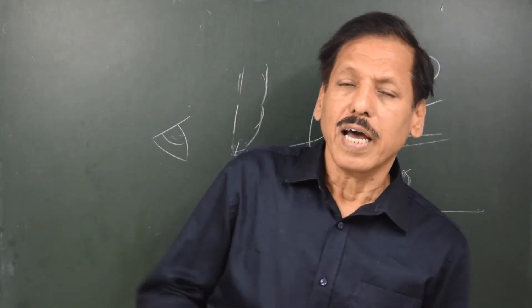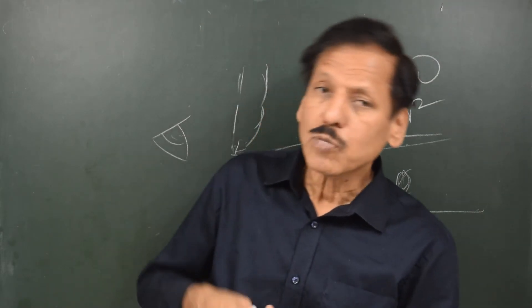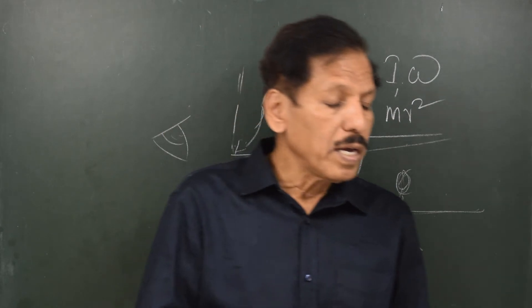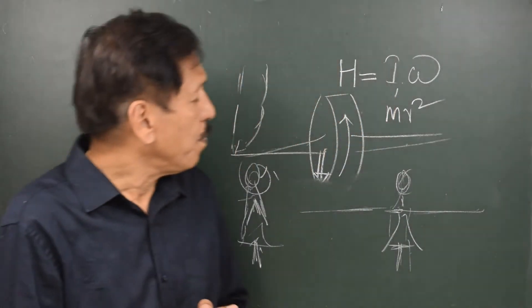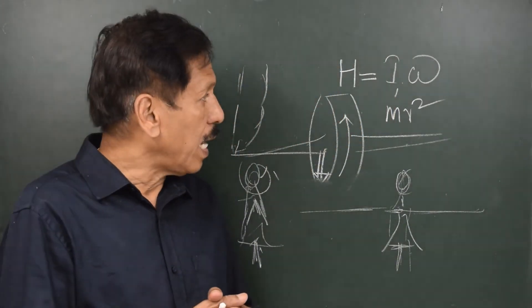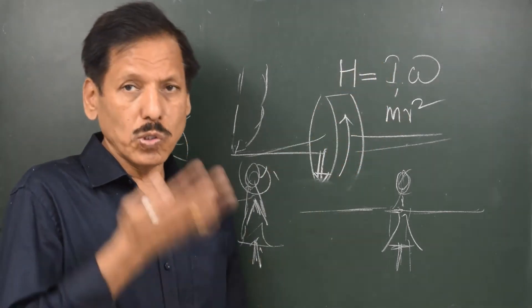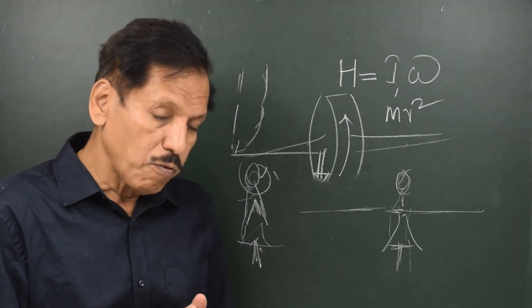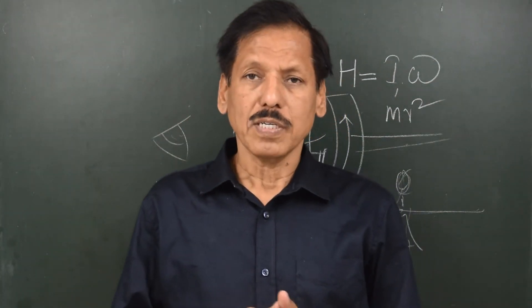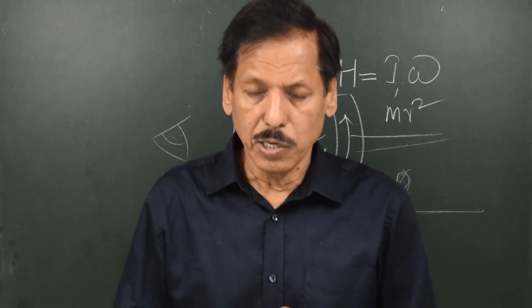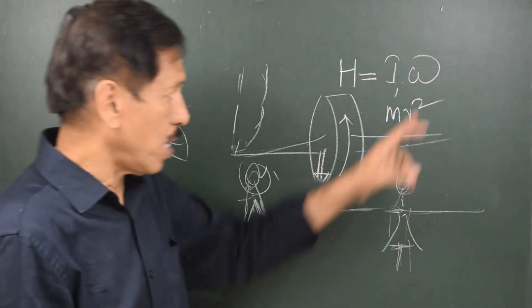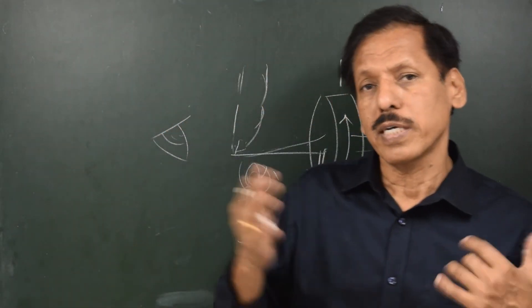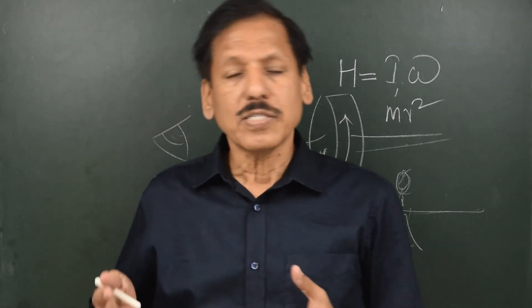By extending her hands, what happens is the mass moment of inertia increases — the radius of gyration increases — so her body has a higher moment of inertia, and if the moment of inertia goes up, omega, that is the angular velocity, will go down. Similarly, if she folds her hands together, the effective radius of gyration is reduced, and thereby the angular velocity can increase. So these are the simple things with which we should associate a complex study like gyro.